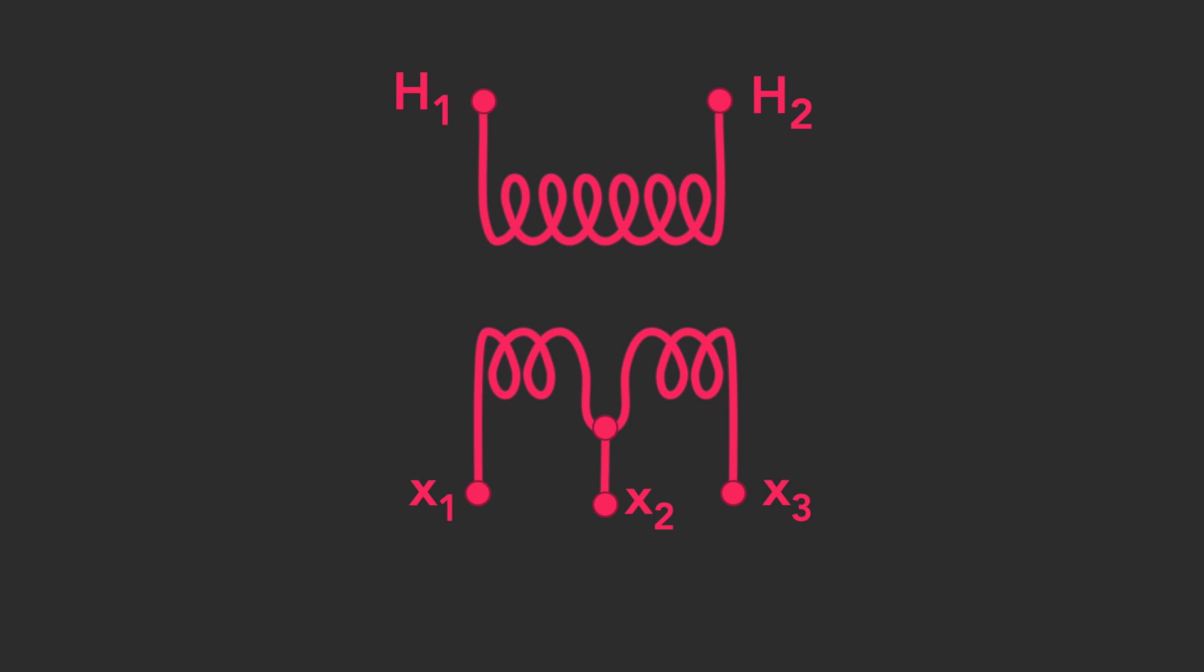In most cases, the X2 bushing has at least two connections on the outside bushing. One connection is to the tank ground just a few inches below the X2 bushing. The second is the neutral connection from the X2 bushing down to the system neutral.